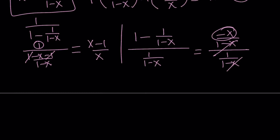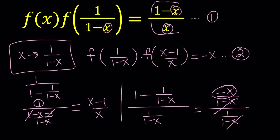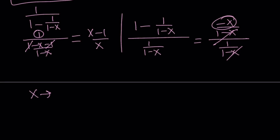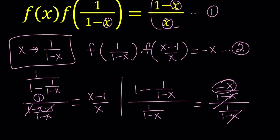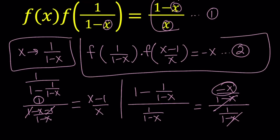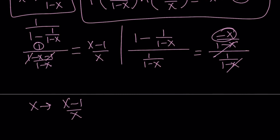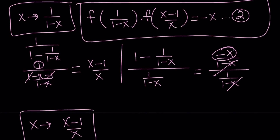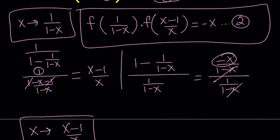The second substitution I'm going to do is replacing x with (x-1)/x in the original equation — always in the original. That depends on the result we got for the second equation. If you look at the second equation, we got f of (x-1)/x. So it makes sense to replace x with (x-1)/x in the original equation. Here's our original equation. Let's go ahead and replace x with (x-1)/x.